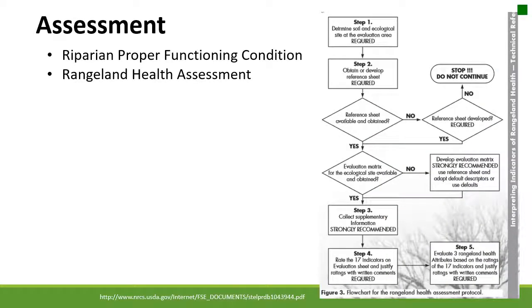Another type of assessment is the rangeland health assessment. To simplify it, it's basically a lot of yes-or-no or presence-absence questions. When you pull it all together, it can provide early warnings of any kind of resource problems you might be having on your rangelands. This one is particularly focused on upland areas of rangelands.